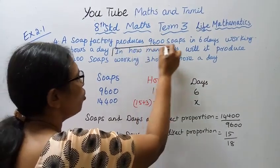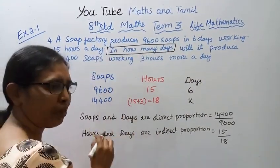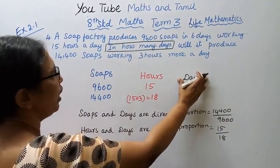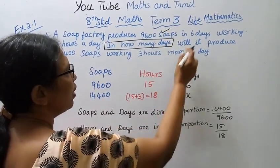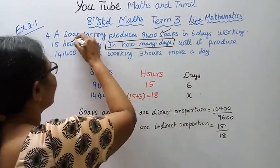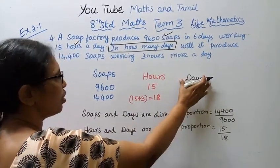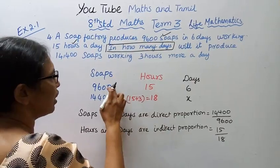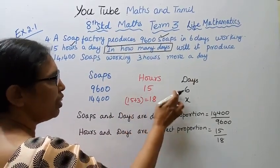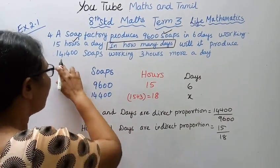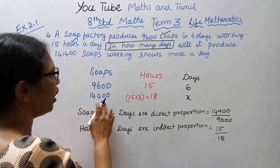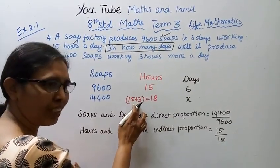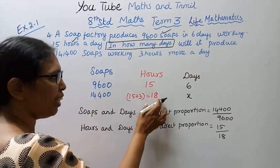In how many days? First, we will see how many days. Days is what we're finding, so days are last. We'll set up columns: soaps, hours, days. The given values are 9600 soaps, 15 hours, 6 days.